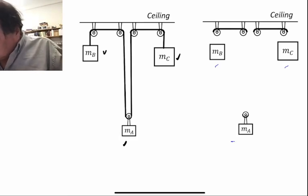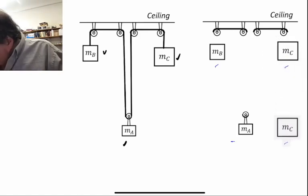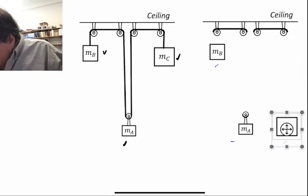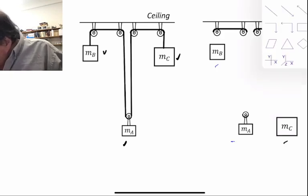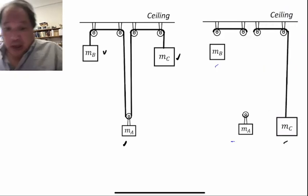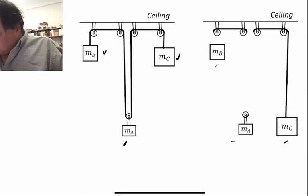So what's going to happen? MC being the biggest mass, it's going down the most. MB being the second biggest mass, it will go down some but not as much.